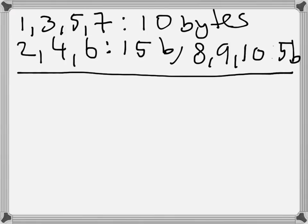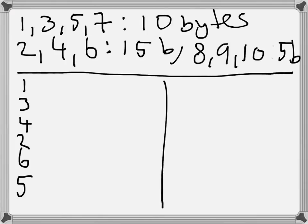Now I'm assuming that they are arriving out of order, and I will write down the sequence in which they are arriving. First I have packet number 1, then number 3, number 4, number 2, number 6, and number 5. Continuing over here: after 5 I have 8, 7, 10, and 9.